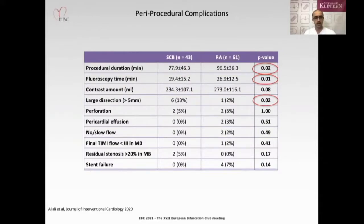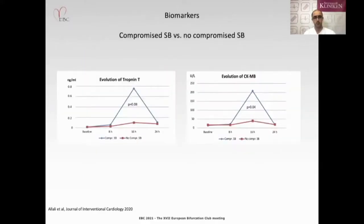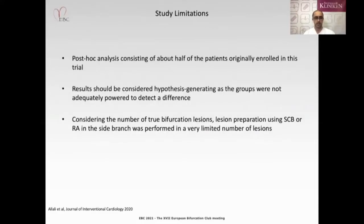In periprocedural complications, we observed a higher rate of large dissection in the scoring/cutting balloon group compared to rotational atherectomy. When comparing biomarkers in patients with compromised versus non-compromised side branch, we observed higher periprocedural elevation of cardiac biomarkers in patients with compromised side branch. This study has limitations: it was a post-hoc analysis including about one-half of patients from the main trial, and was not powered to detect differences, so results should be considered hypothesis-generating.